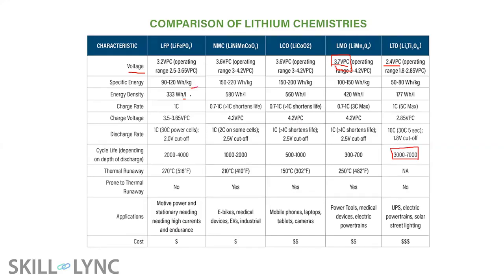The table also shows energy density per liter or per kilogram, and charge/discharge rate. Modern cell phone batteries support fast charging — up to 80% charge in around 30 to 45 minutes. Temperature limits and thermal runaway thresholds are also listed. High life cycle batteries tend to be very expensive, while others like LFP are available at comparatively cheaper rates.